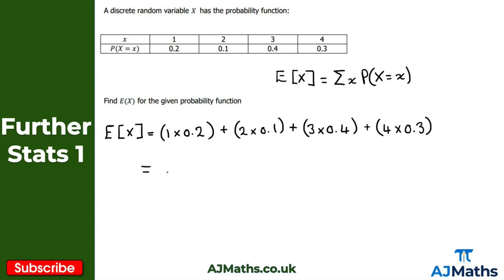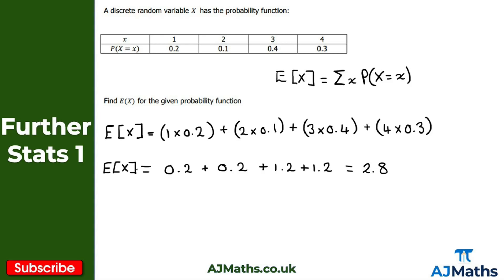1 times 0.2 gives 0.2; 2 times 0.1 also gives 0.2; 3 times 0.4 gives 1.2; and 4 times 0.3 also gives 1.2. Adding everything together: 1.2 plus 1.2 is 2.4, plus 0.2 is 2.6, plus another 0.2 gives 2.8. So the expectation of the random variable x is 2.8 — that's what you should have got for this practice question.